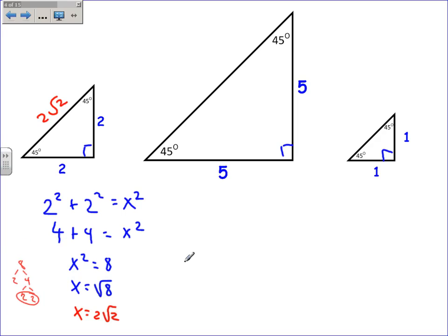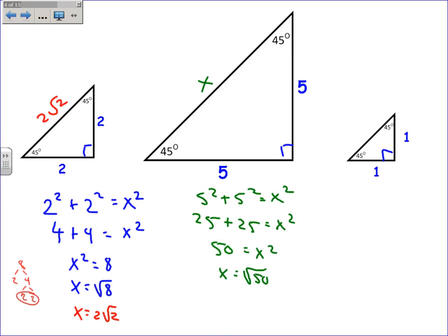For legs of 5 and 5, I'll again call this x. 5 squared plus 5 squared equals x squared. 25 plus 25 equals x squared. 25 and 25 make 50, so x equals the square root of 50. To simplify, I'll make a factor tree: 50 is 2 and 25, and 25 is 5 times 5 — a perfect square. So x equals 5 root 2.